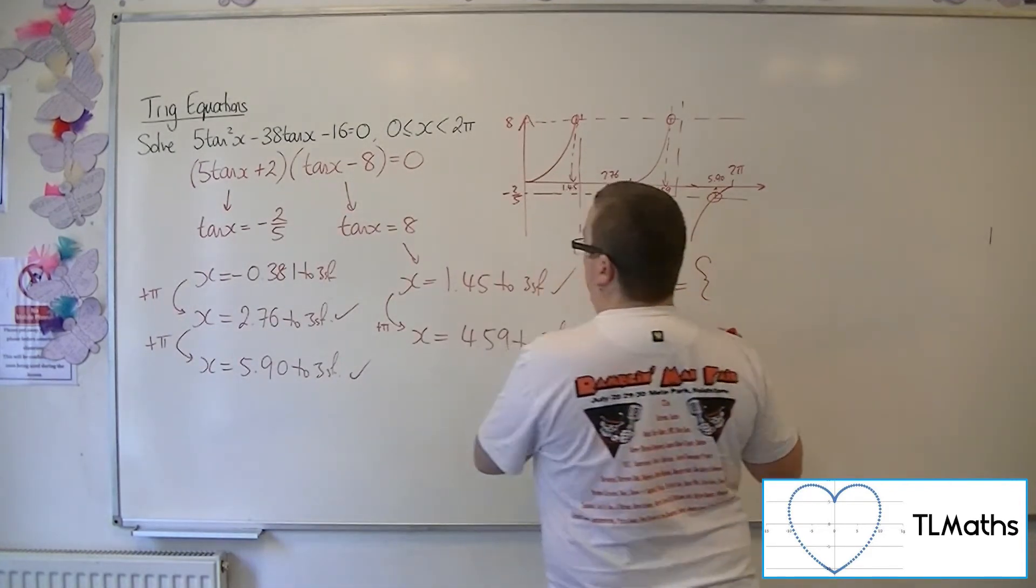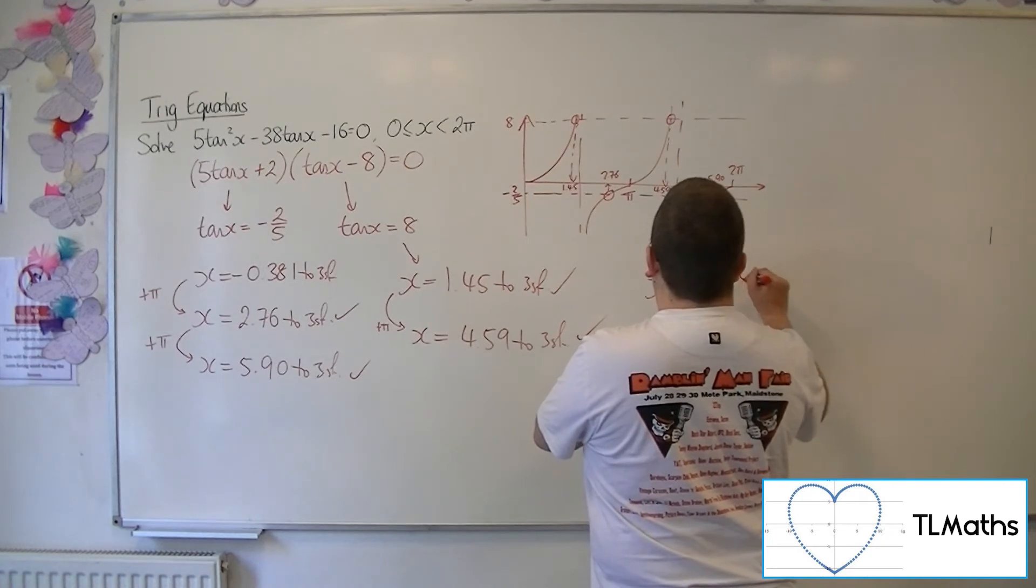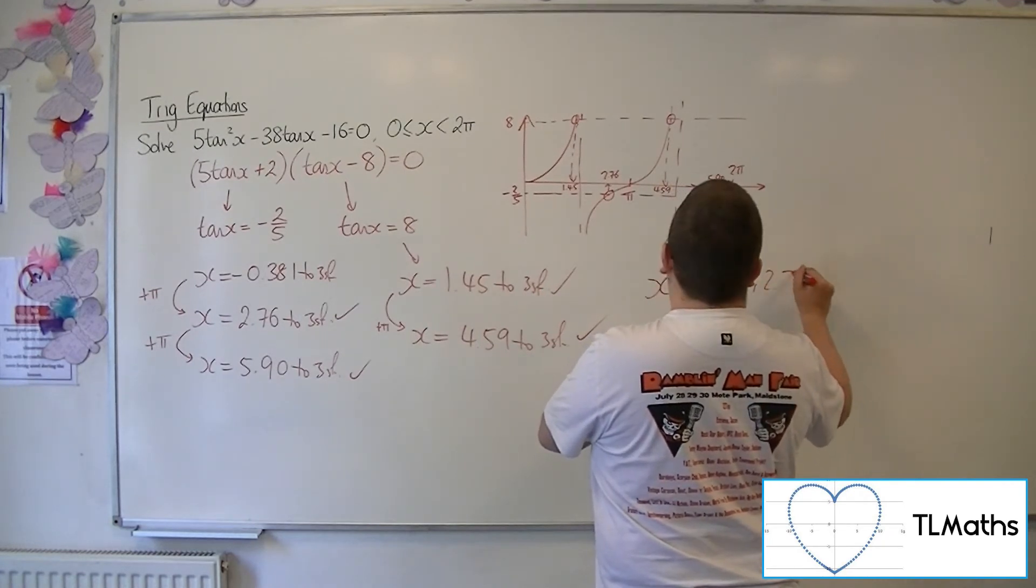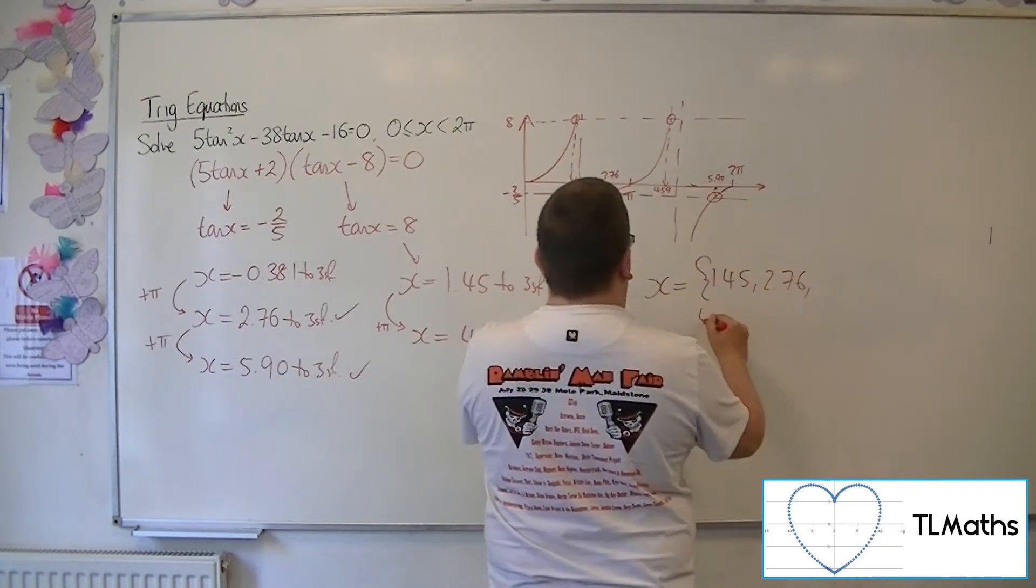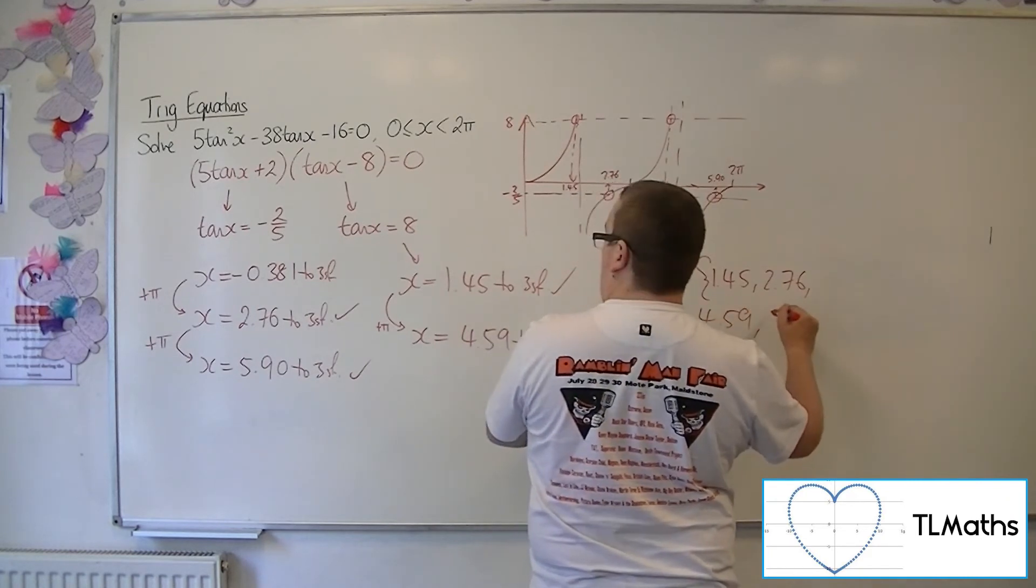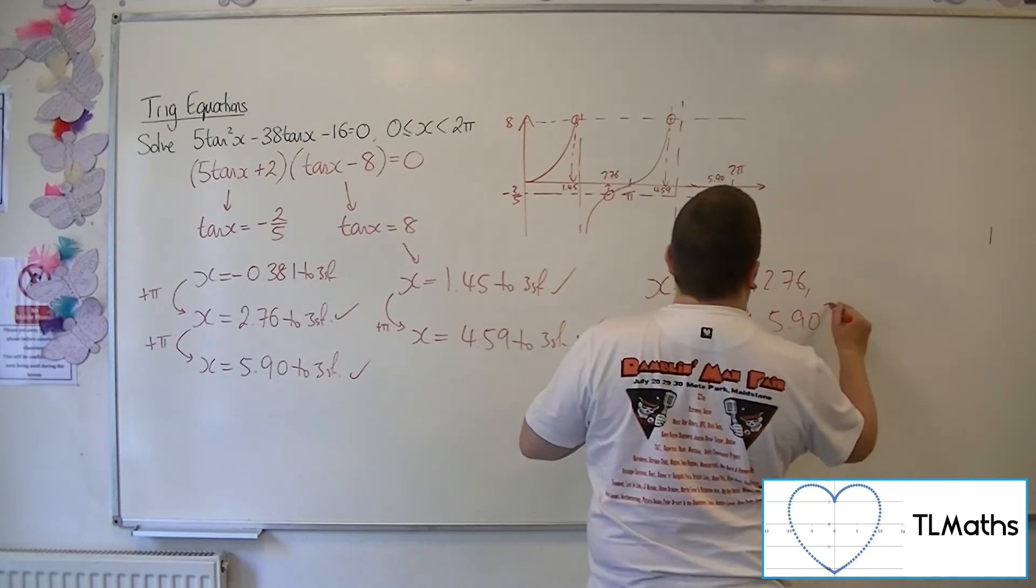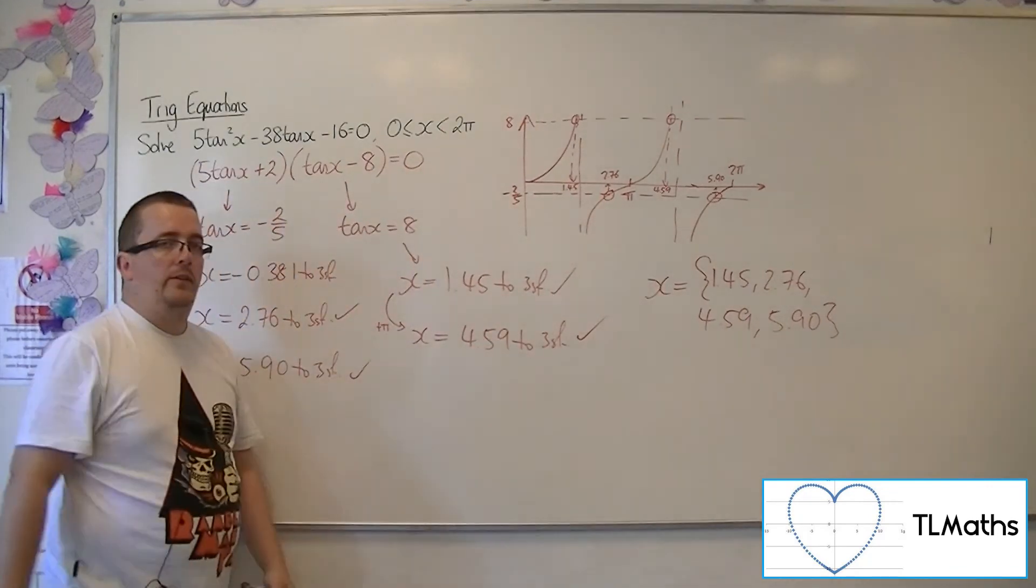So in order of size, we've got the 1.45, we've got 2.76, 4.59, and 5.90. All to 3 significant figures.